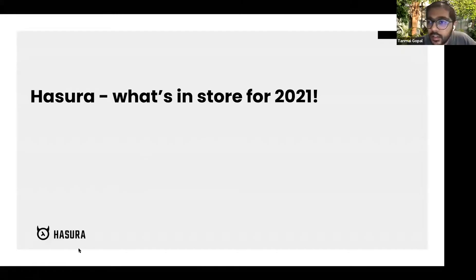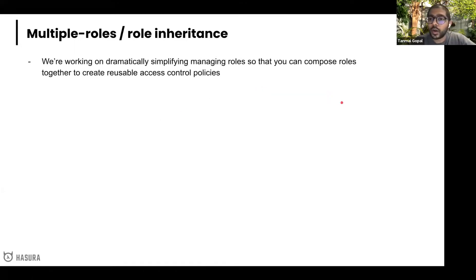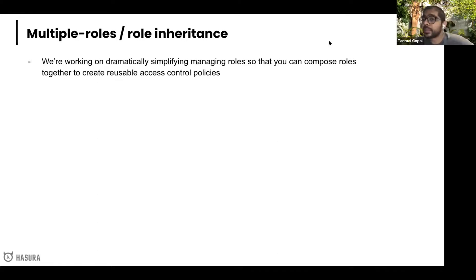Tanmay: All right, end of the year call. I'm going to talk about stuff we have in store for 2021 and things that we've been working on. The first thing is multiple roles and role inheritance — speccing out how that would work. It's a slightly complex feature because Hasura supports a bunch of different data sources, and there are lots of peculiar scenarios when combining roles and role inheritance.